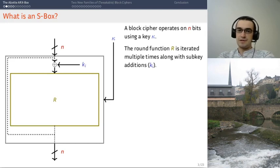It's a permutation of the space of n-bit strings which is parameterized by a key. In practice, block ciphers operate using a round function. This round function is iterated multiple times using also a subkey called KI, which is xored into the state before the round function. The round keys are derived from the master key using the key schedule, which I'm not going to talk about today.